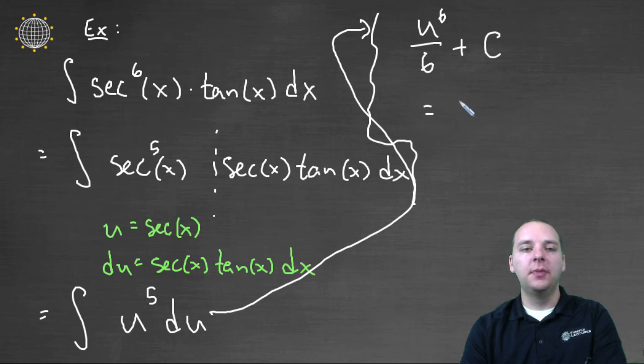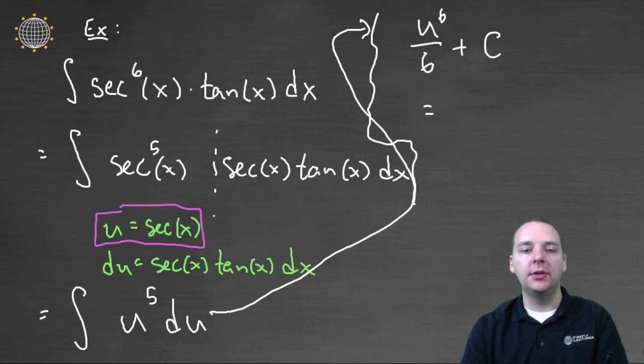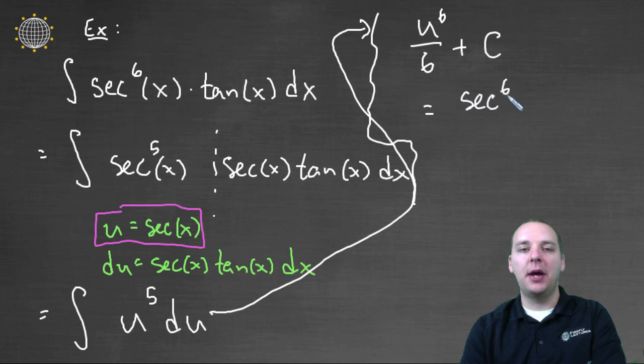And then for our final answer, we would simply take the u out and use whatever we chose as our u and put that back in our answer. So in this case, we would get secant to the sixth power of x divided by six plus c.